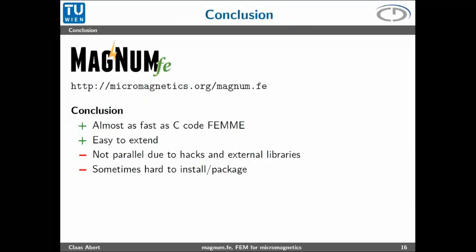That's it, the conclusion. You can find the code. In conclusion, Magnum FE written in FEniCS is almost competitive with the C code that was developed in our group years ago, but it's much easier to extend. Right now the downsides are that we cannot compute in parallel due to all these hacks I showed you and due to external libraries. We have some problems getting Magnum FE to work on our local computation cluster, so this is right now a downside of this approach to use FEniCS in production. With that, I want to thank you for your attention.